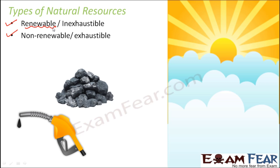Non-renewable resources are just the opposite. Once we have used them, they are finished and cannot be renewed. One example is coal — once you burn coal and utilize the heat energy, that coal is gone. These are called exhaustible resources. Moreover, the next stock of coal takes millions of years to form, but to use that coal you just need a couple of hours, so the stock will eventually run out.